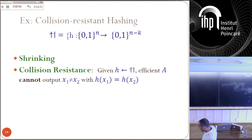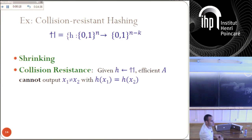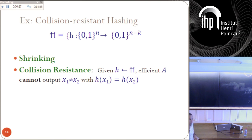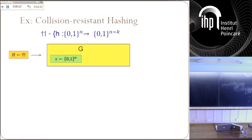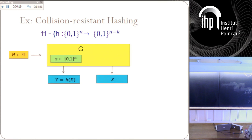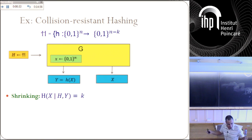Let me give an example. A collision-resistant hash function is a well-known primitive — a function family which is compressing, meaning its output length is shorter than the input. And still, an efficient algorithm cannot find a collision. Even though there are many collisions — say 2 to the k to 1 — an efficient algorithm given the description of the hash function cannot find a collision. And maybe it exists, maybe it doesn't. But if it exists, I want to think about the following generator: this generator gets from outside a random hash function, then it flips — it chooses a random string, outputs the hash value of this string, so output y equal h of x. And then outputs x.